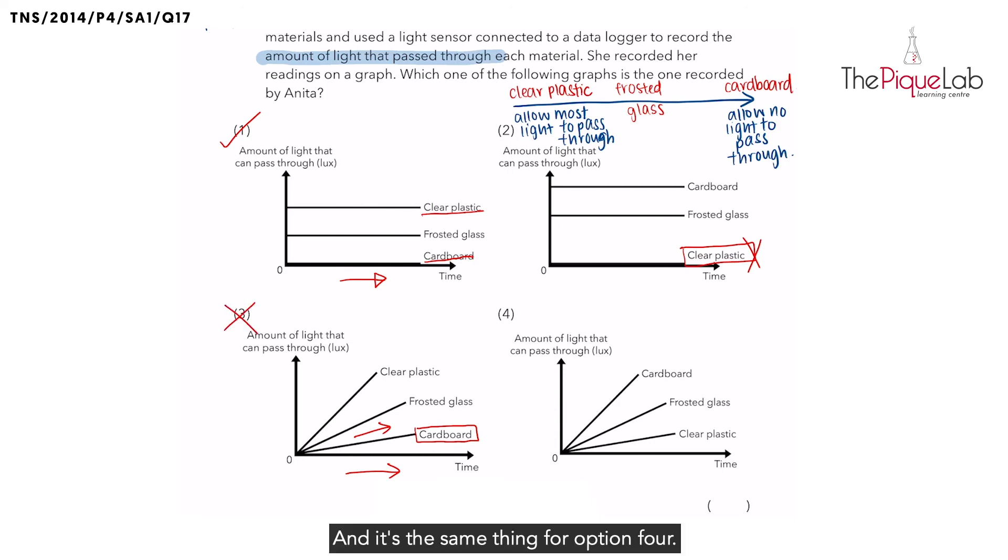And it's the same thing for option four. They switched the materials around, but they are still telling you that as time passes, the materials will actually allow more and more light to pass through. That is not correct as well. So what would be our correct answer? The only possible answer would be number one.